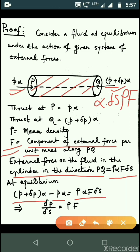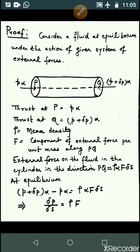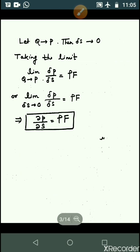Next, as Q tends to P, then delta S tends to zero. Taking the limit, we have del P by del S is equal to rho F.